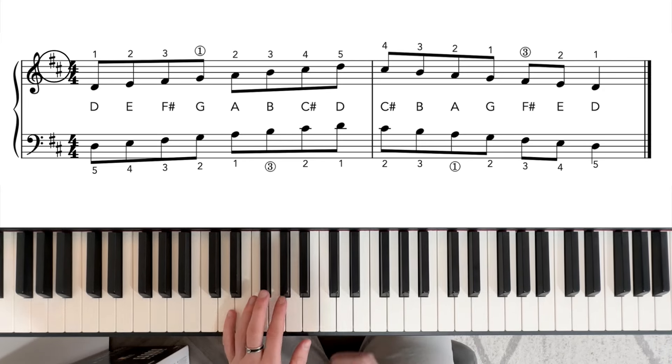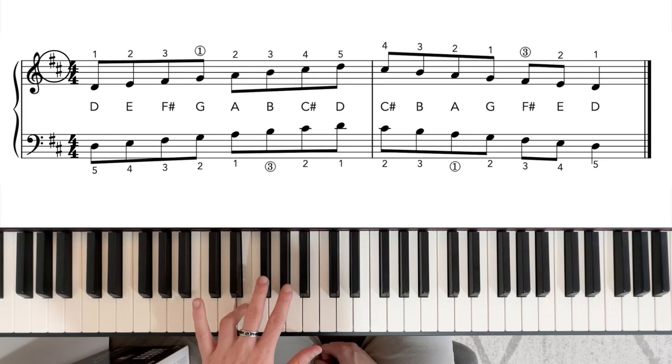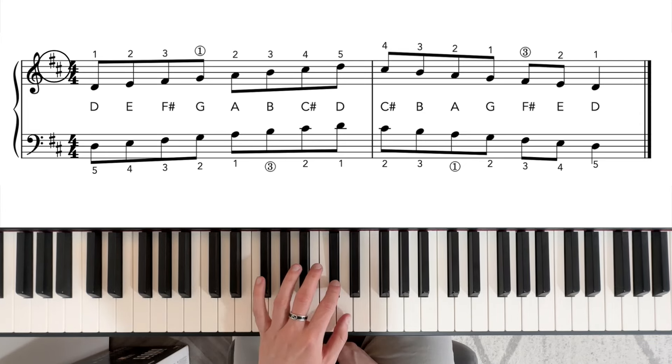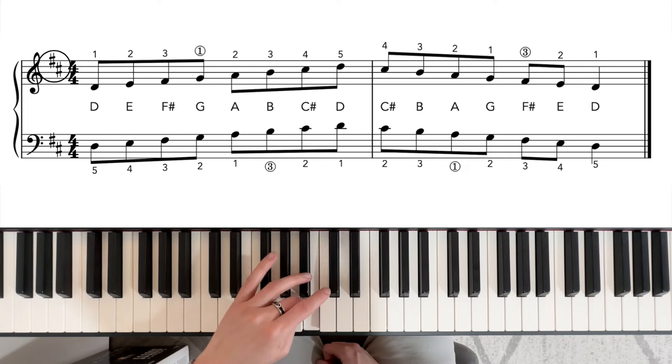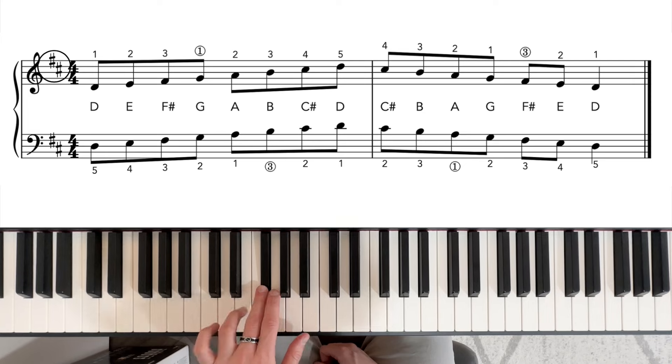The left hand starts again on D, same notes, starting on 5. 5, 4, 3 on the F sharp, 2, 1, number 3 on the B, C sharp, and D. Coming back, 2, 3, crossing 1 under onto the A, G, F sharp, E, and 5 on the D.